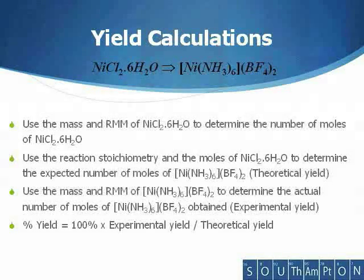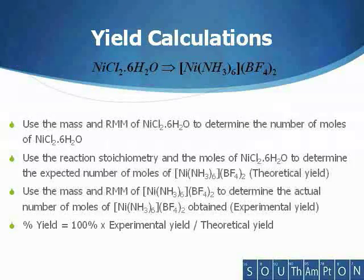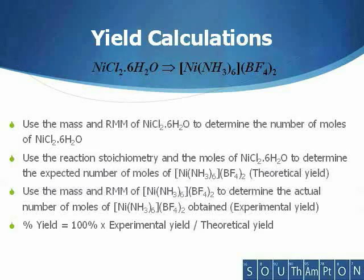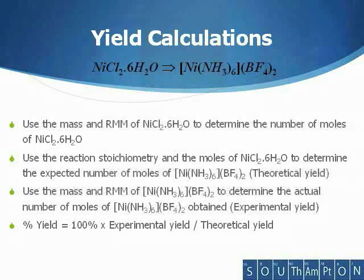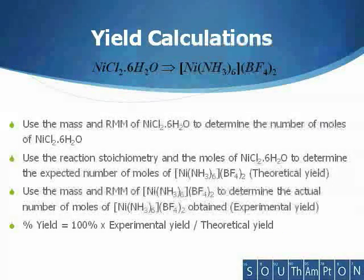Using the weight of the sample produced, the actual number of moles produced of hexaamine nickel tetrafluoroborate can be determined. The fractional yield is the fraction of the theoretical yield that was actually realized — that is, the actual yield divided by the theoretical yield. The percentage yield is simply the fractional yield multiplied by 100%.